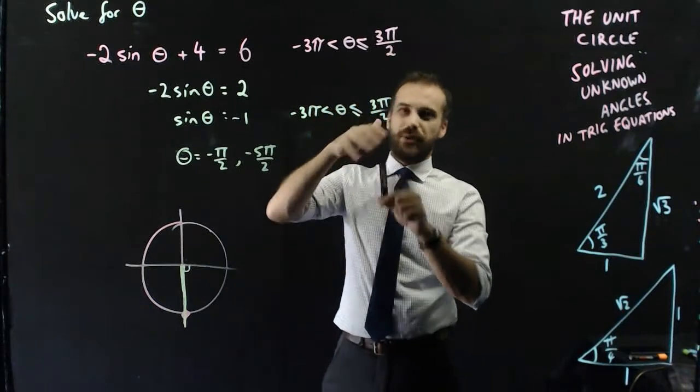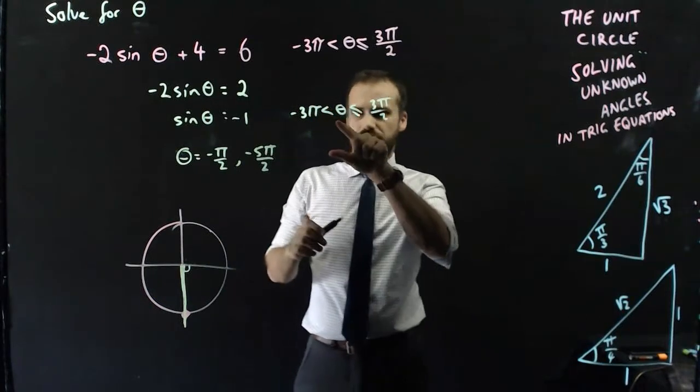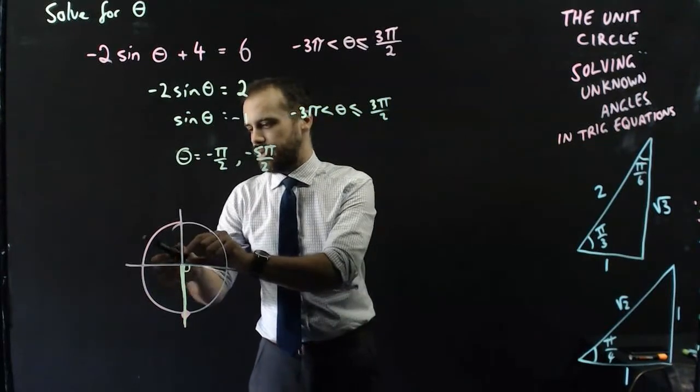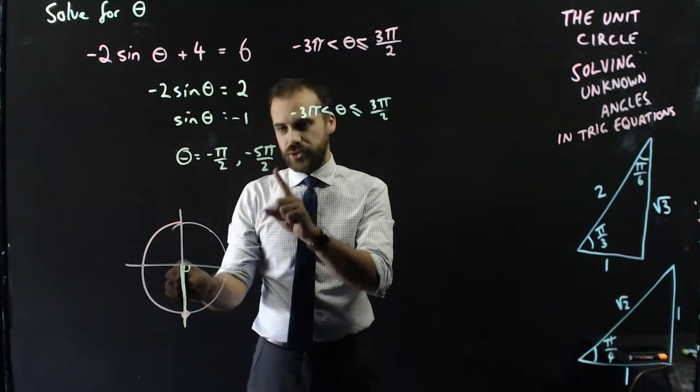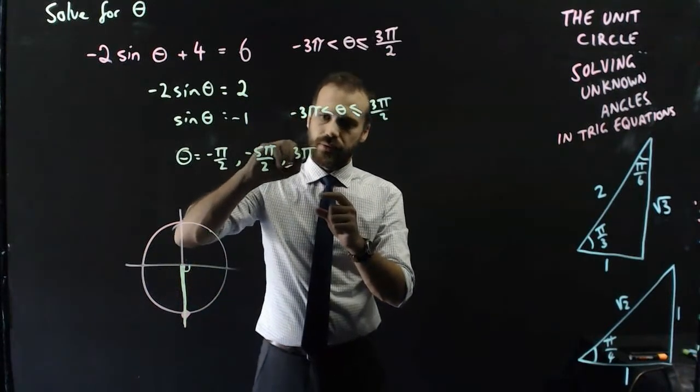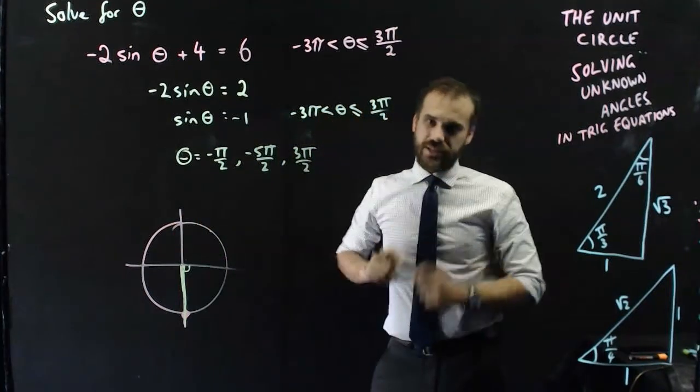Now I need to do the positive version here, so I'm going from 0 to 3π on 2. So I'm starting at 0, and I'm going around, and I'm getting to 3π on 2, and that's one of my answers in this example.